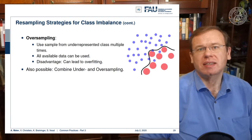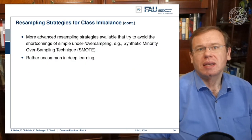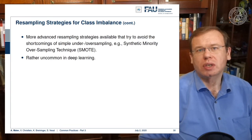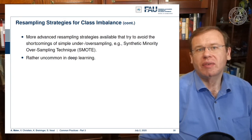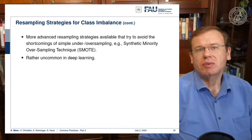Also possible are combinations of over- and undersampling. This leads to advanced resampling strategies that try to avoid the shortcomings of undersampling by using synthetic minority oversampling (SMOTE). This approach is rather uncommon in deep learning.